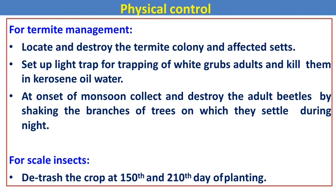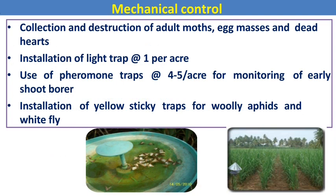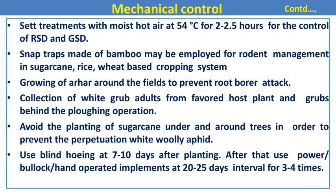For mechanical practices, collect egg masses and dead hearts from infested fields and install light traps. Light traps are mostly used against nocturnal pests, pheromone traps against Lepidopteran pests, and yellow sticky traps against all types of sucking pests. Hot air seed treatment at 54 degrees centigrade for 2 to 2.5 hours is used for control of major pests. Snap traps made of bamboo may be employed for rodent management in sugarcane, rice, and wheat cropping systems.